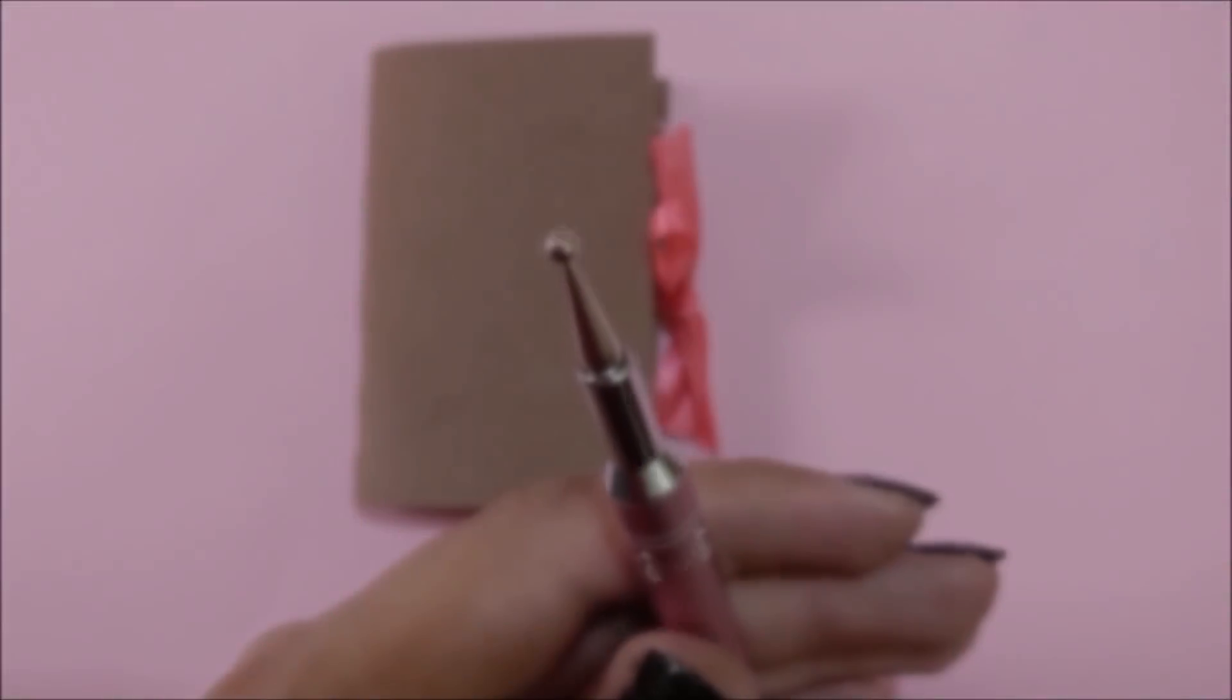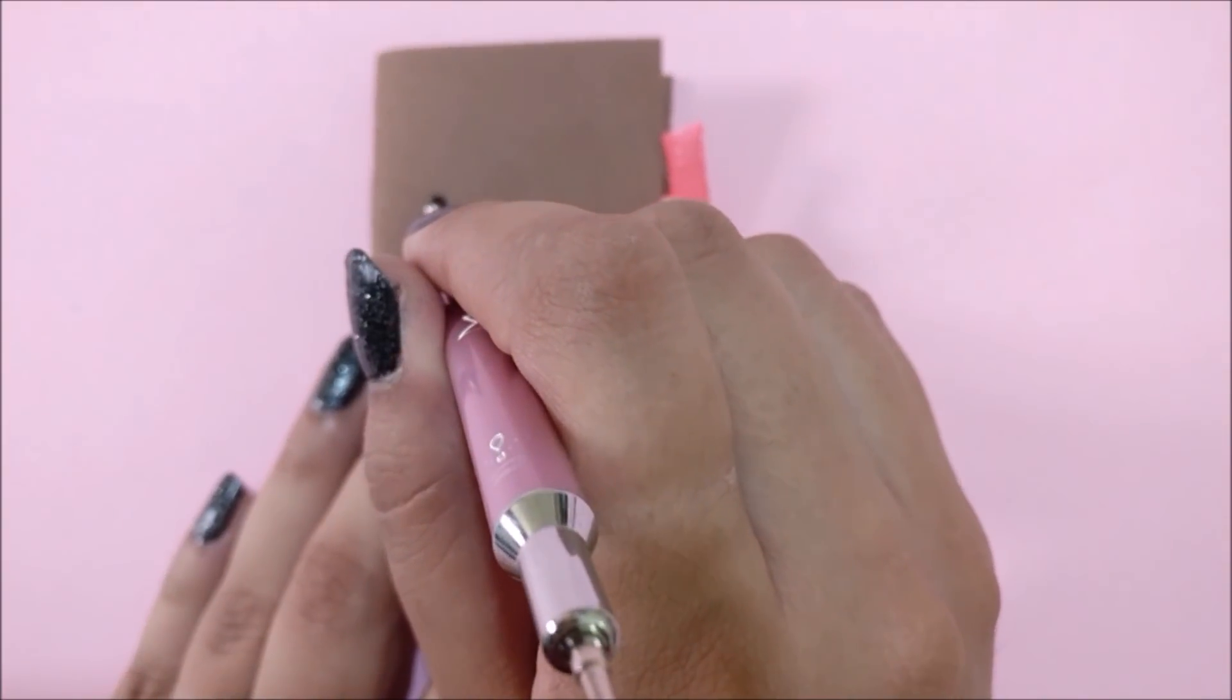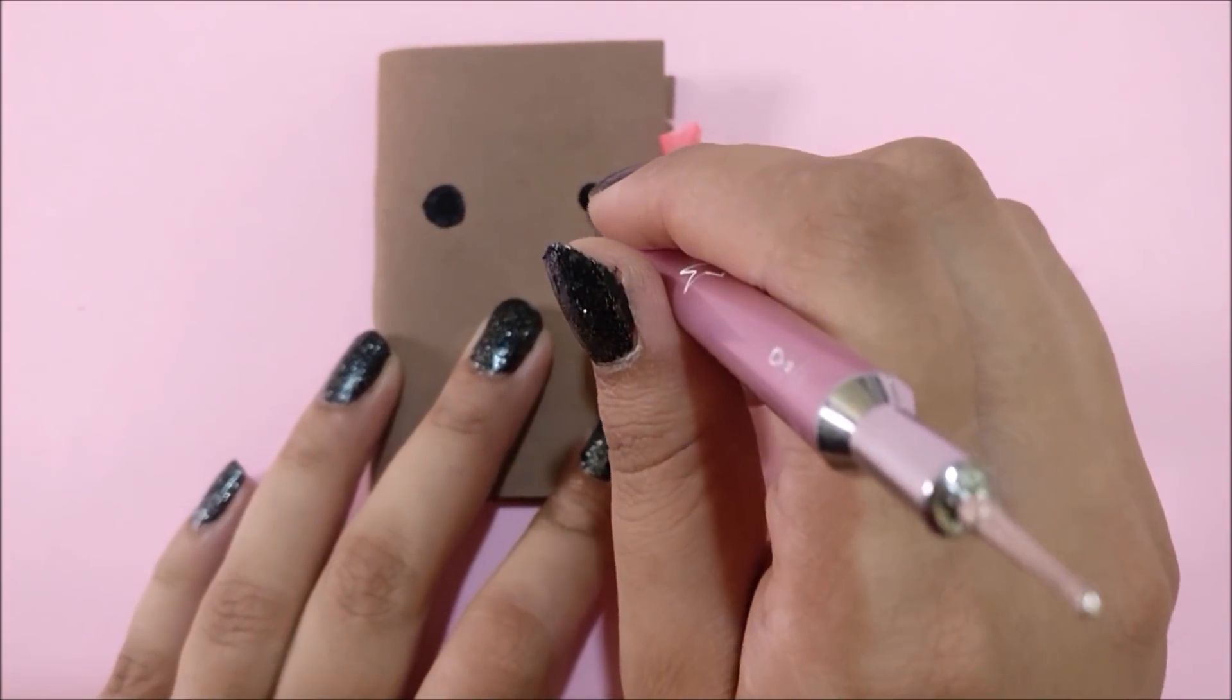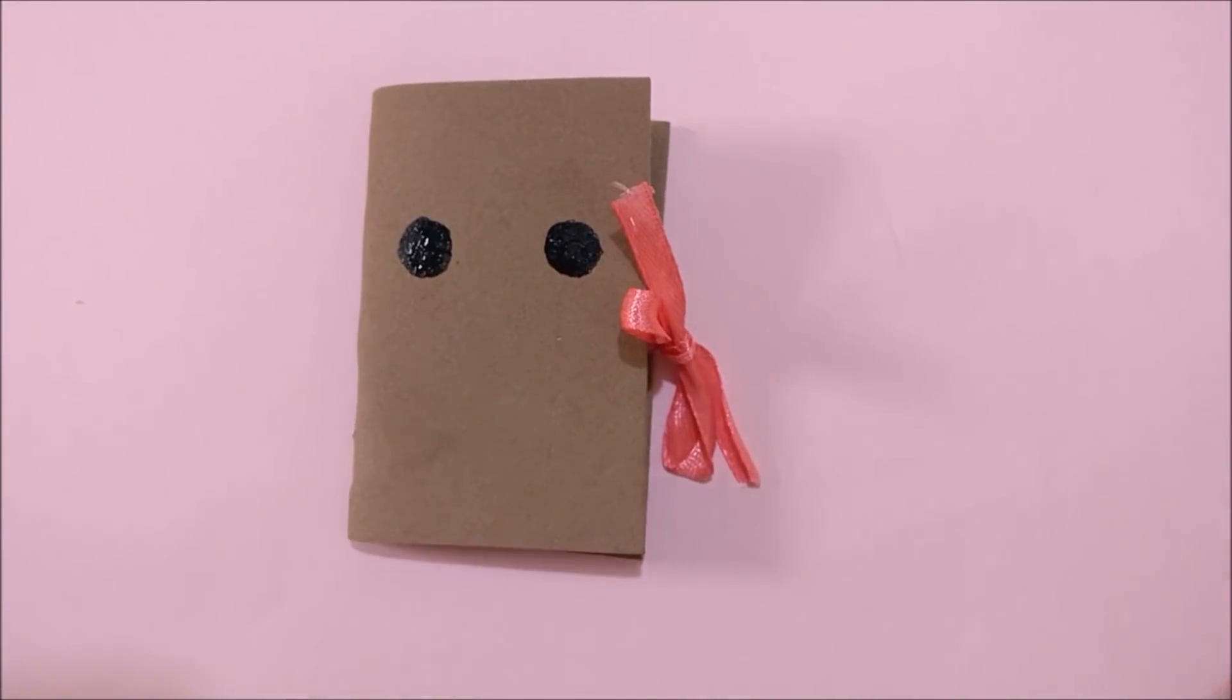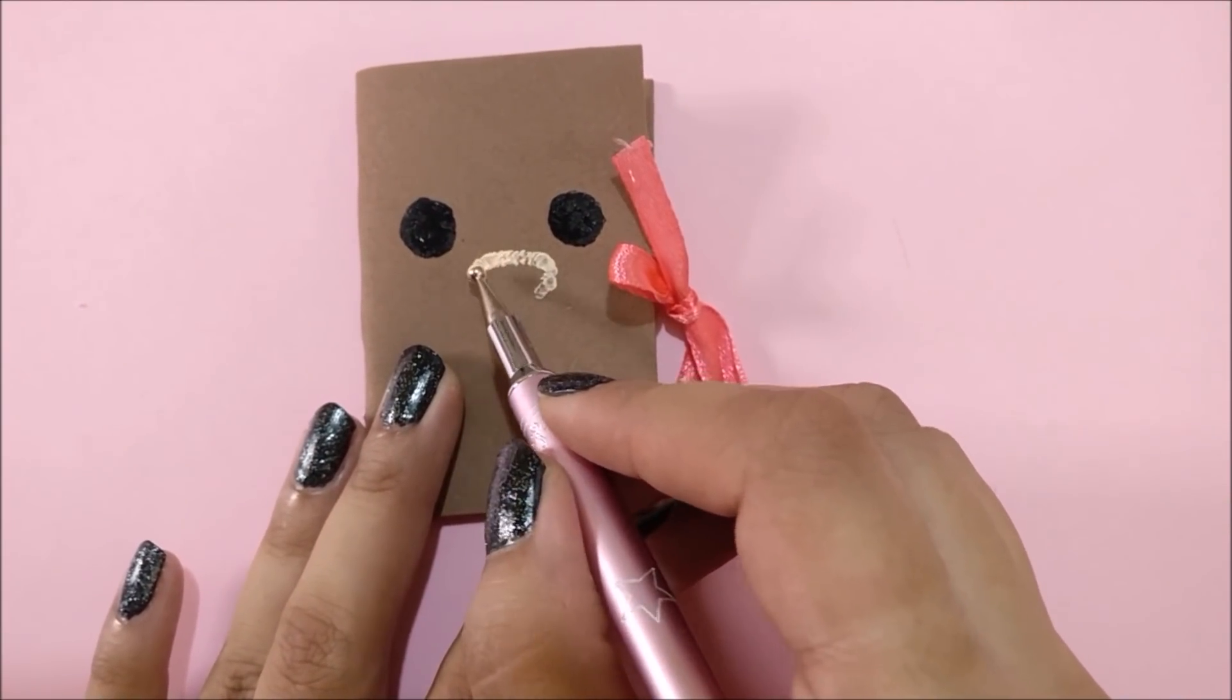Now to make the bear face on our book, I am using this dotting tool. First, I am using black acrylic paint and drawing the perfect round eyes with the help of this dotting tool. If you don't have this dotting tool, you can also achieve the same results with the help of a toothpick, paintbrush, or any round object.